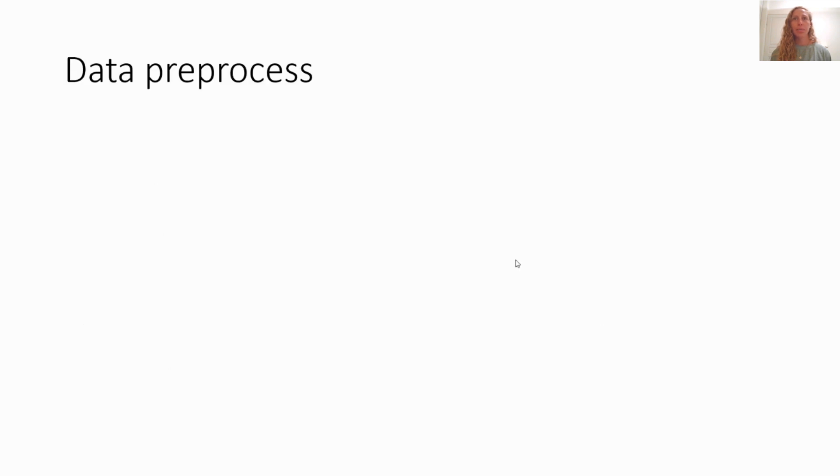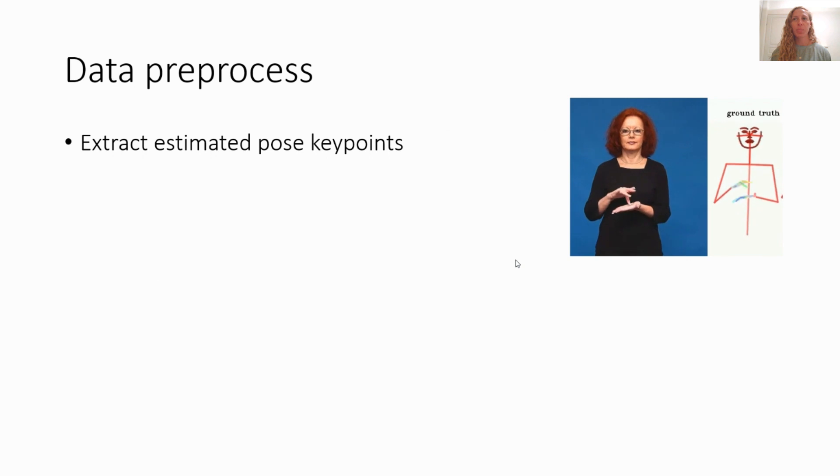To get our data, we extract estimated pose keypoints using the pose estimation model OpenPose from the original videos. Each keypoint consists of a 2D location and the confidence of the model in its location. Then we process the extracted poses by first filtering out leg keypoints since they are irrelevant for the task, and keypoints with low confidence, so the model does not learn from wrong or non-existing keypoint locations.